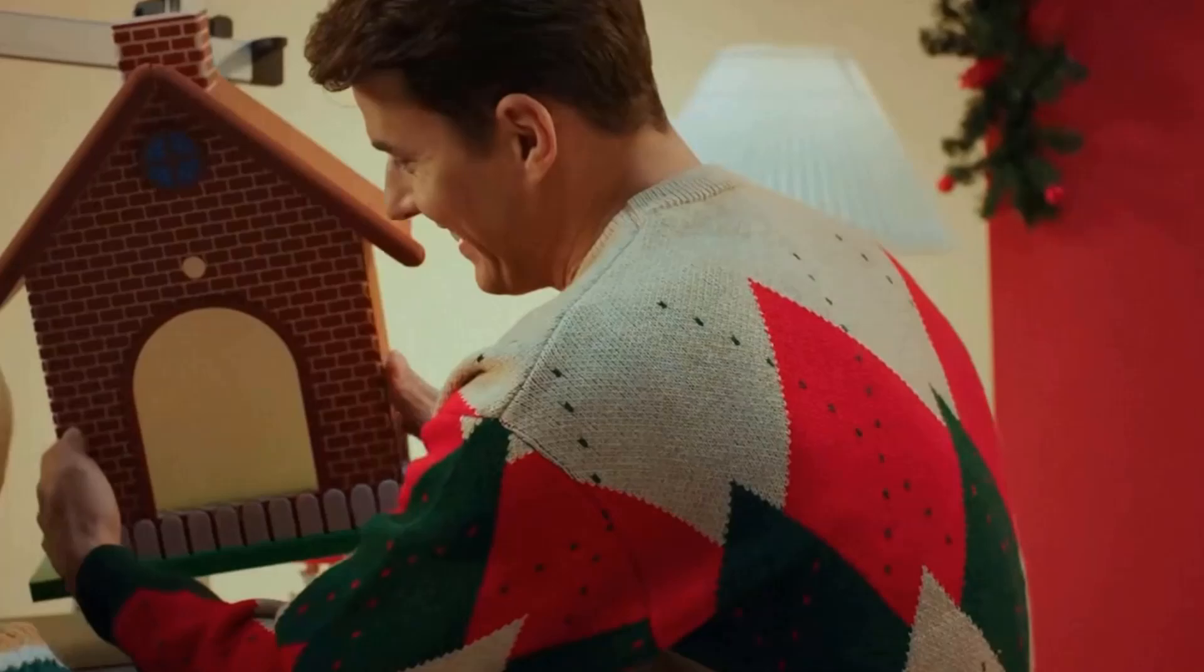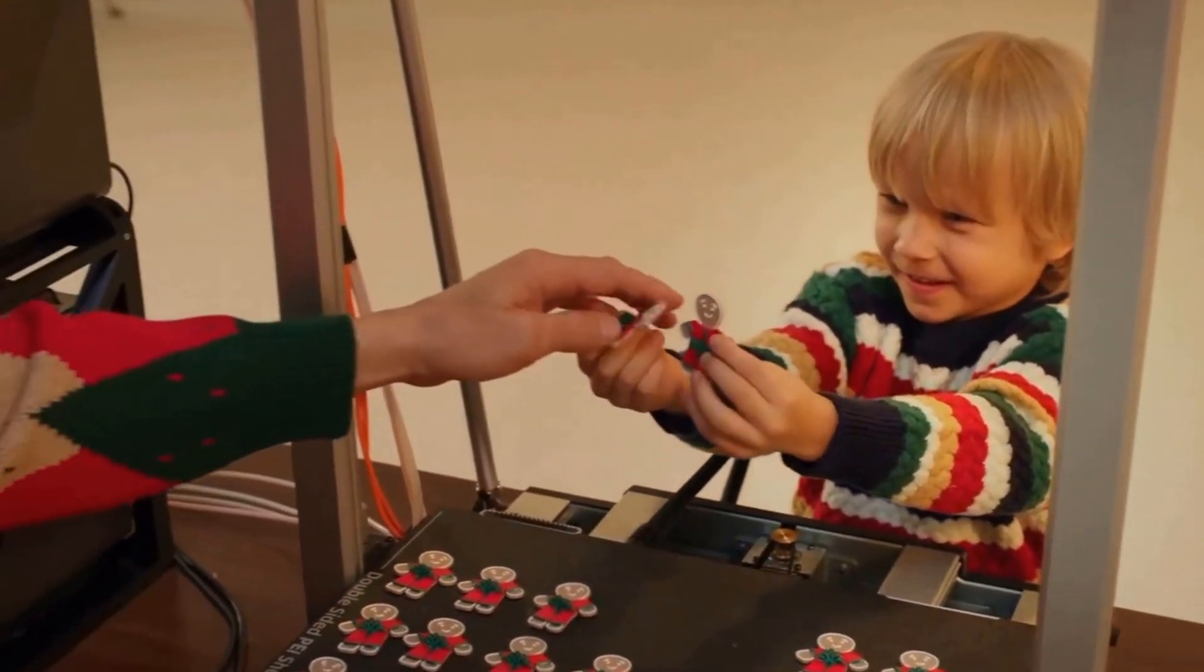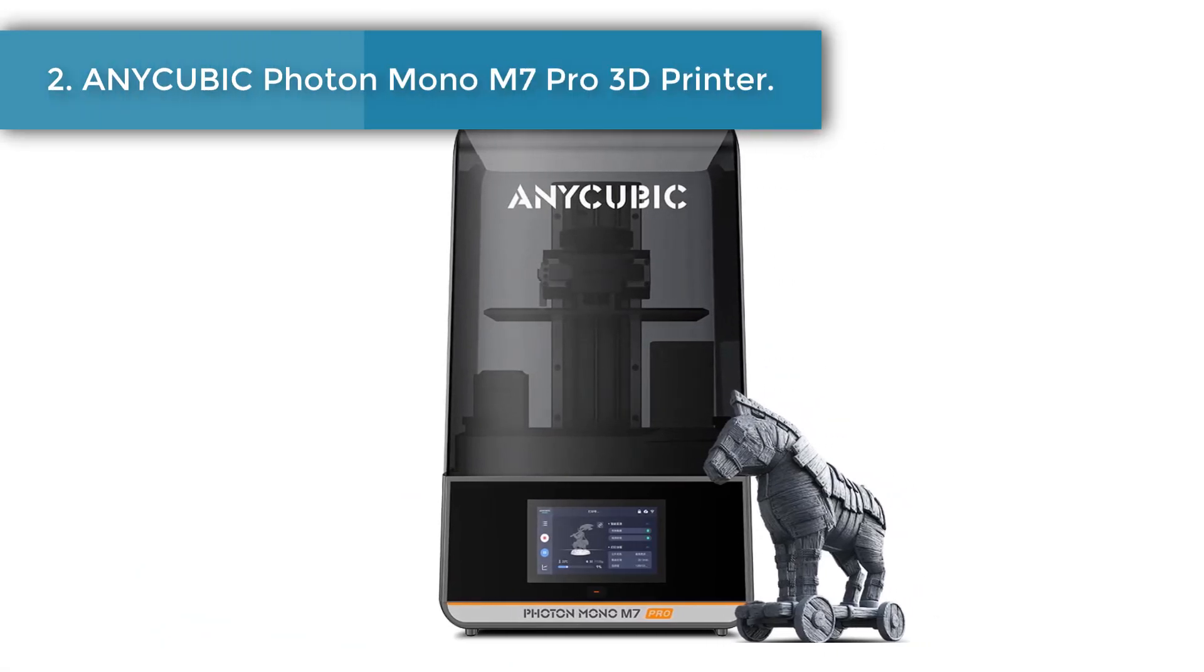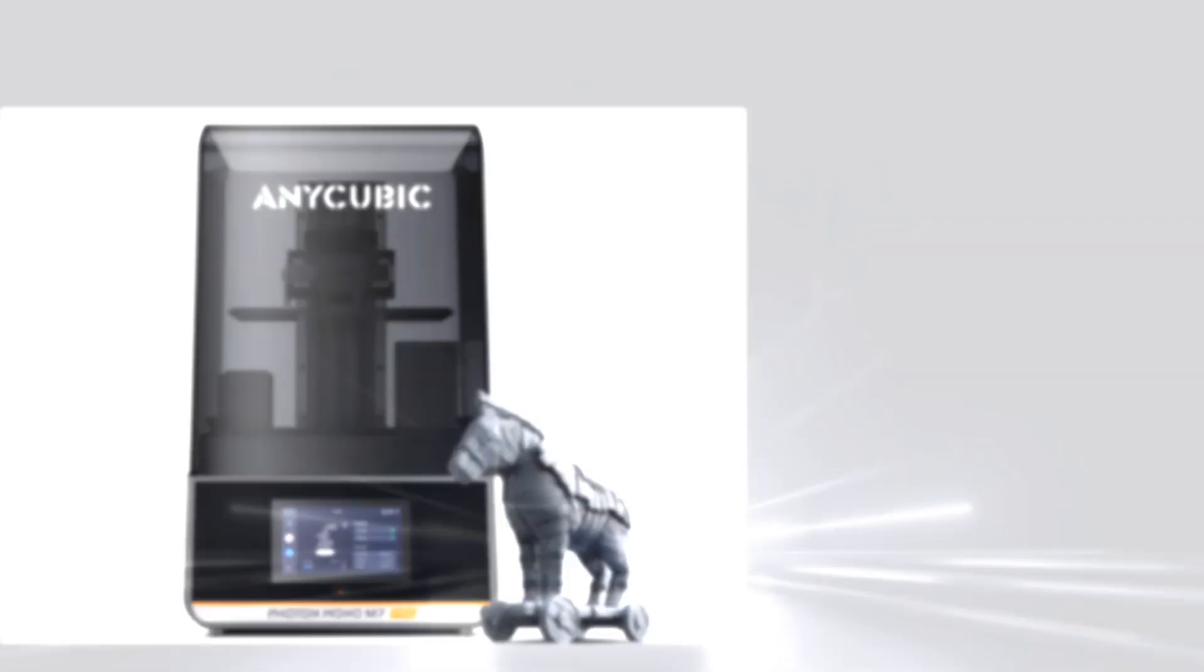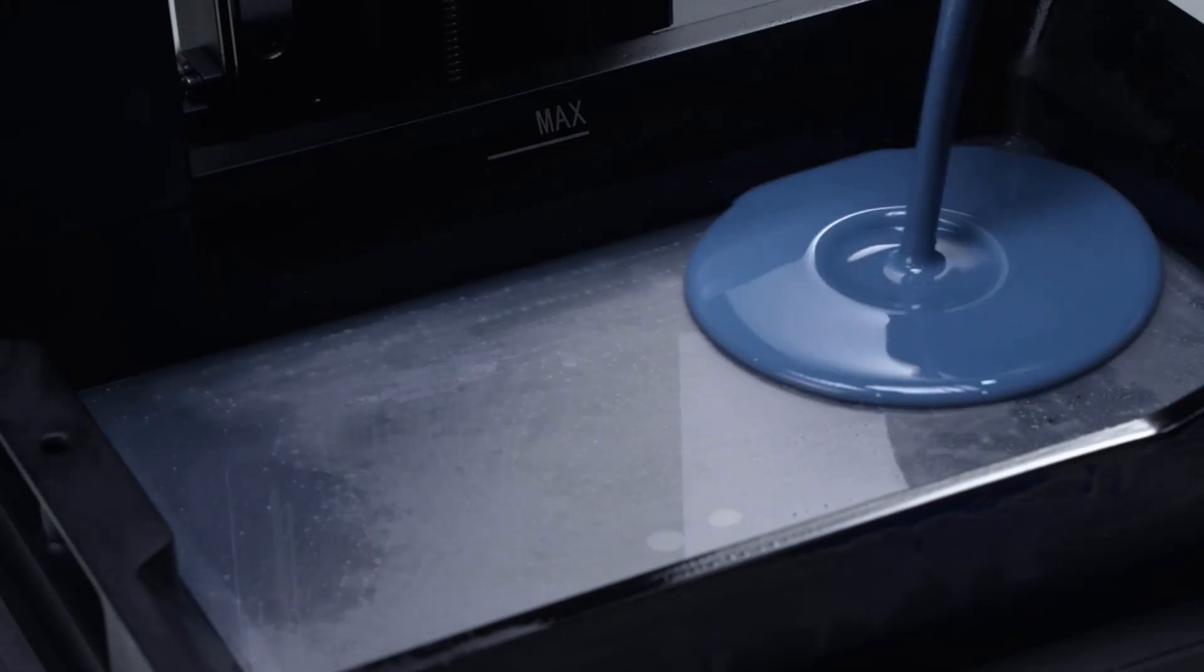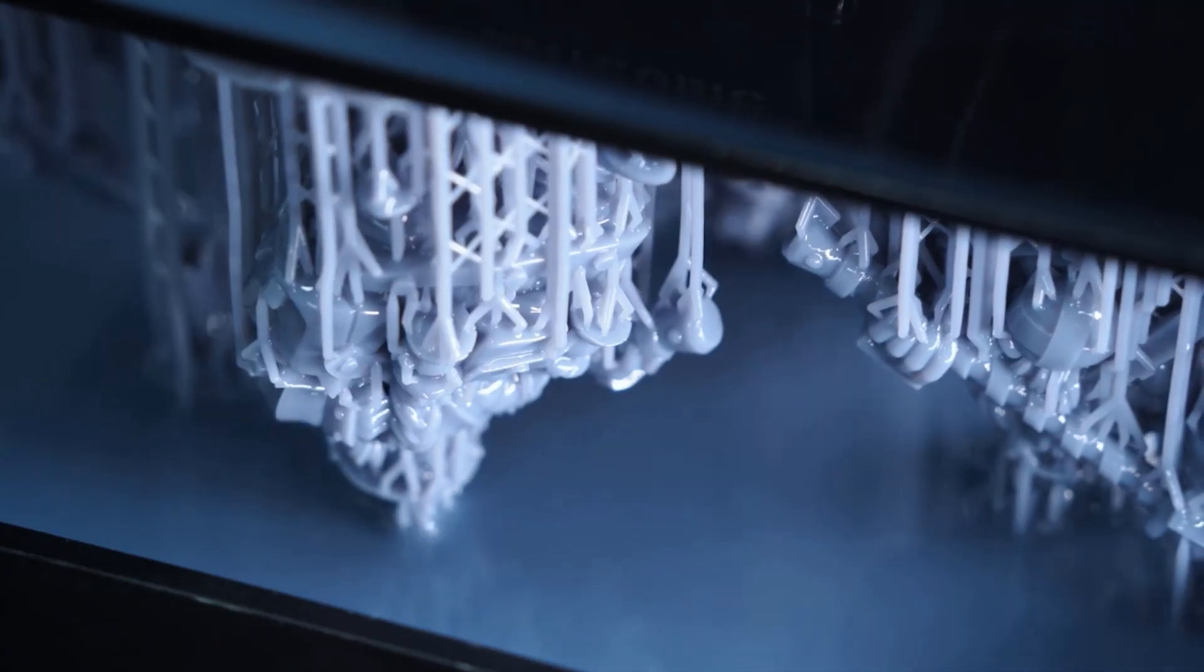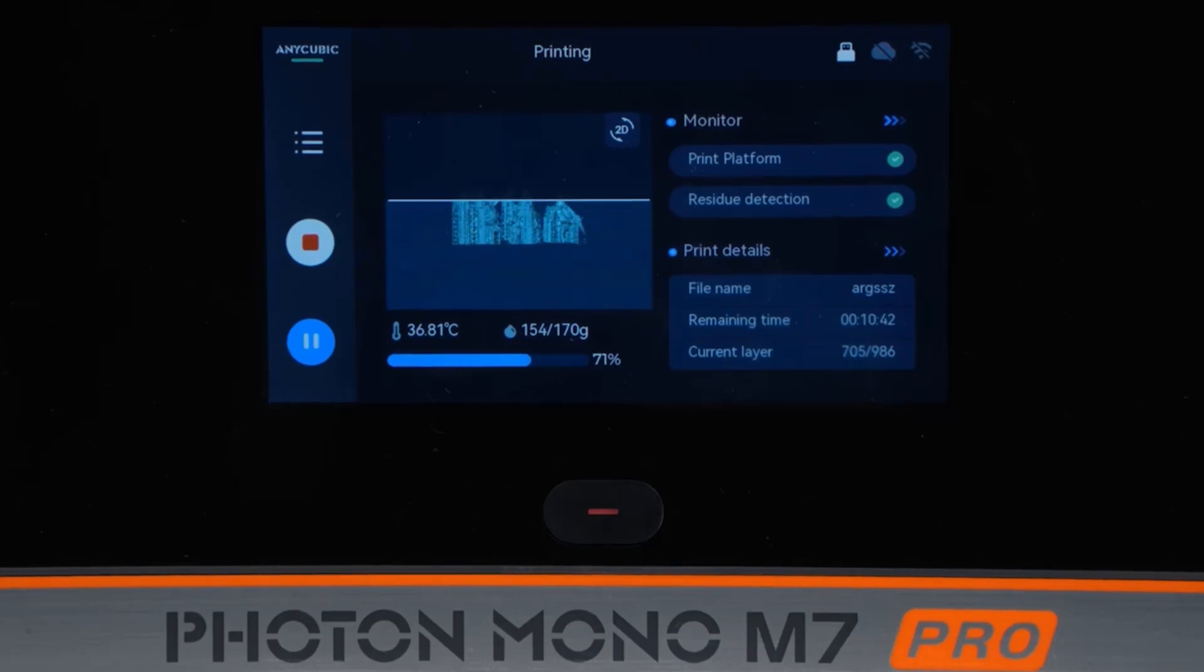Number two: Anycubic Photon Mono M7 Pro 3D printer. Breaking down the resin limitations, experience high-speed printing. Under testing conditions at 0.1mm thickness with high-speed resin 2.0 and 0.1mm layer height, print time is 170mm per hour.